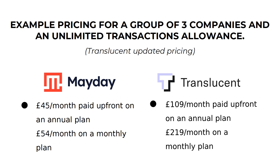It would really depend on your circumstances, so the best thing would be to compare quotes for each based on your specific situation. Playing around with Mayday's pricing, it looked like you'd have to push above 14 to 15 companies before it became more expensive than Translucent — which for most small to medium-sized businesses seems very unlikely. So for three companies within a group, or for most SMEs, Mayday is typically going to be the cheaper option.